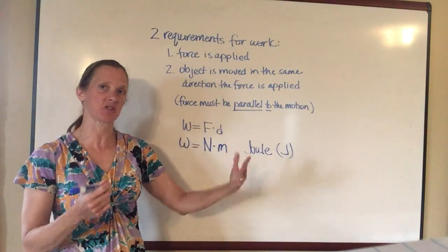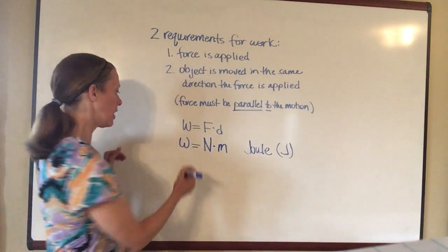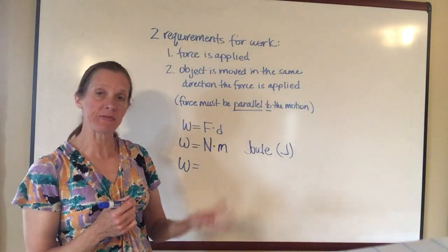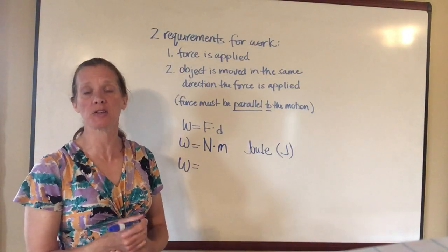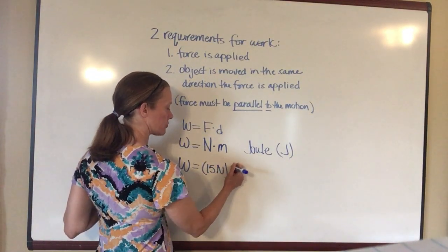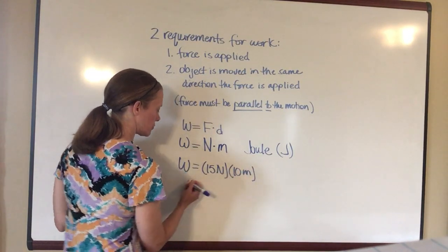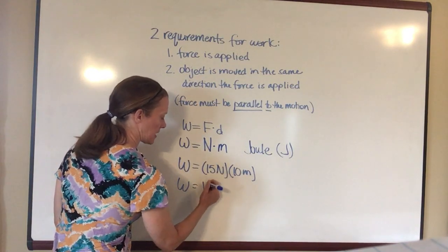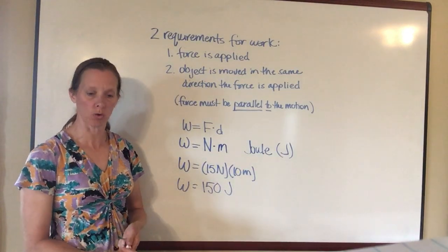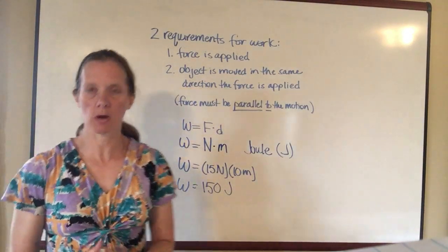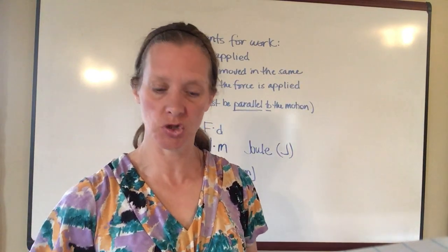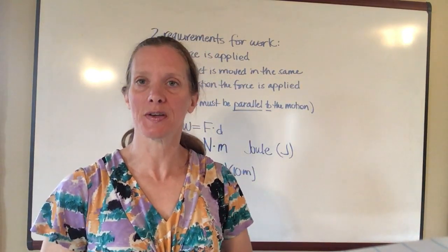For example, if I apply 15 newtons of force to a box and it moves a total distance of 10 meters, then 15 times 10 is 150, and since it's newtons times meters the answer is 150 joules. You'll be doing a homework assignment today calculating work done and deciding whether work has even been done in a given situation, and when you come back next time we'll start talking about simple machines.